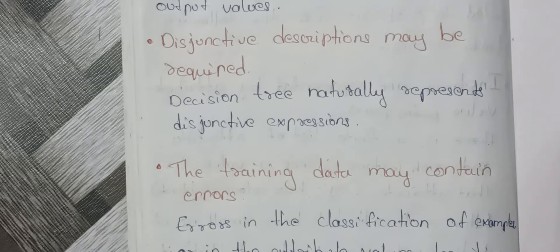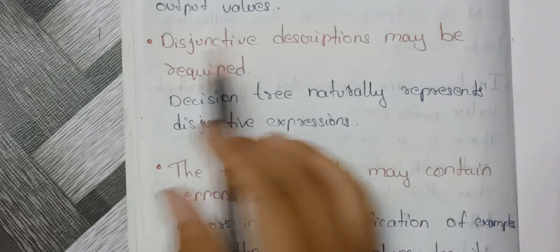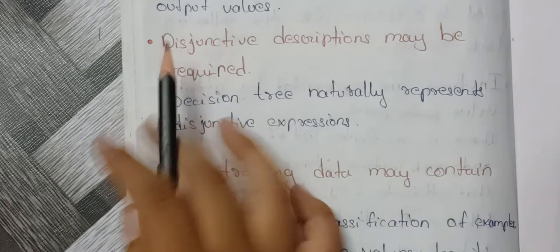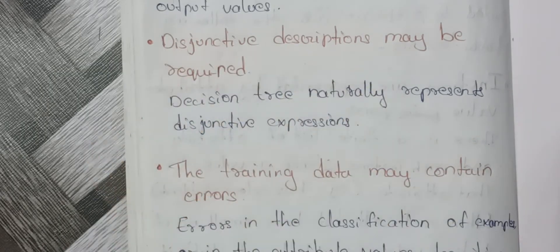For example, it is raining but I have a fever — that is a contradiction type. For disjunctive problems, the decision tree is the best solution.